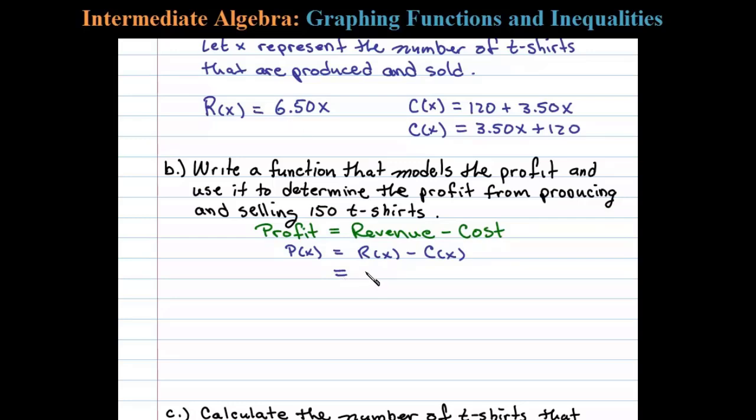In this case, the revenue is 6.50x minus the cost function, 3.50x plus 120. Notice I put this cost function into parentheses to remind myself that I have to apply the distributive property. That gives us 6.50x minus 3.50x minus 120, which equals 3x minus 120. This is our profit function.